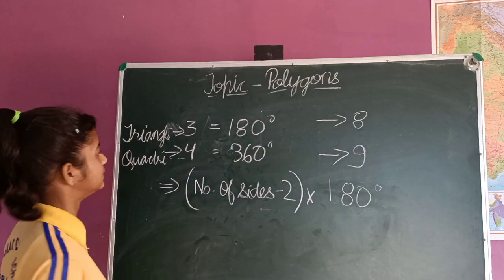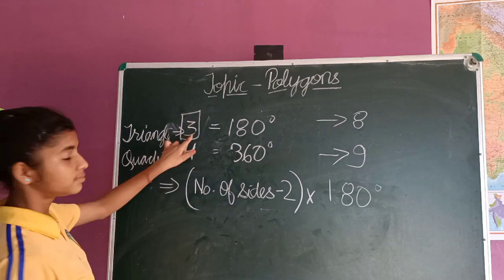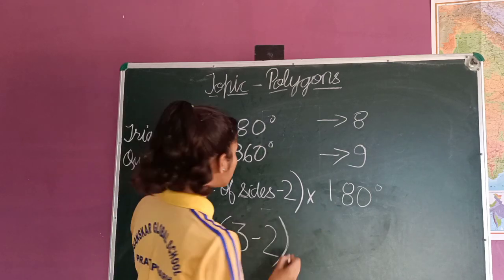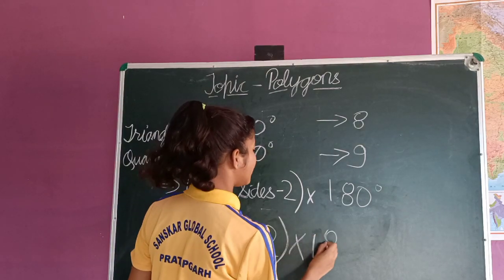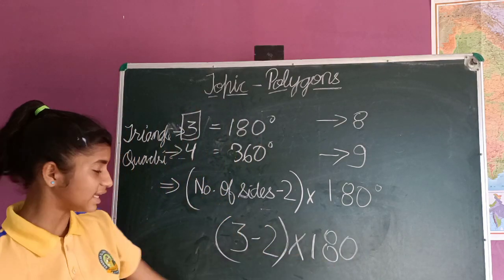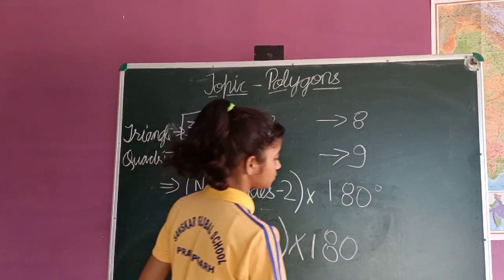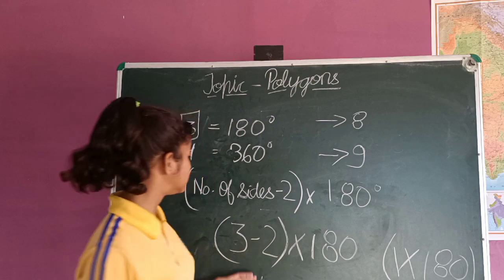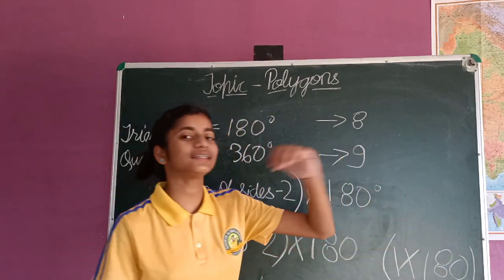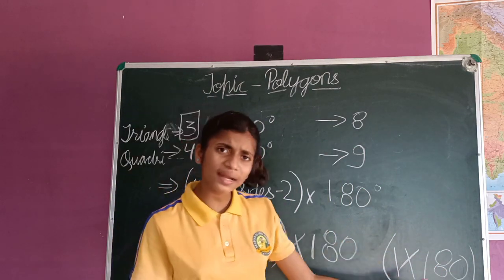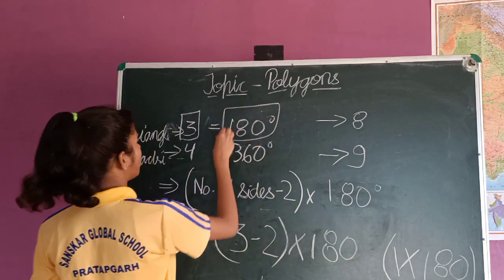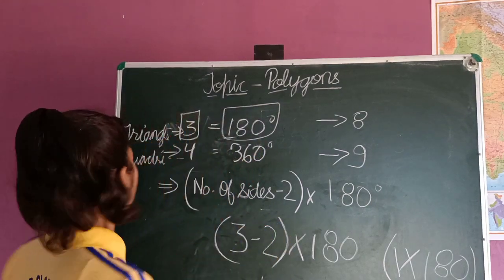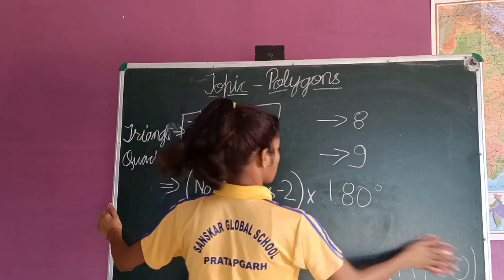Let's take the example of a triangle. Triangle has 3 sides, so: 3 minus 2, into 180 degrees. Solving this: 3 minus 2 equals 1, and 1 into 180 degrees equals 180 degrees. We all know that the sum of all the angles of a triangle is 180 degrees, and today we have proven it with this formula. Now let's check for quadrilaterals also.